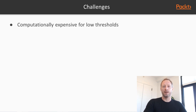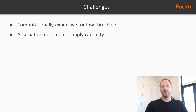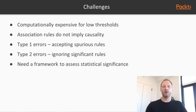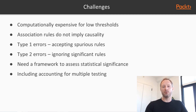There are numerous challenges in dealing with market basket analysis and association rules more broadly. They can be very computationally expensive because there are many potential rules to explore, especially with low thresholds. We will look at the a priori algorithm shortly, which has managed to address this challenge successfully. It's also important to keep in mind that association rules do not imply causality. You can also run into statistical errors — for instance, type 1 errors where you accept rules that are not actually valid, and type 2 errors where you ignore significant rules and miss them. We need a framework to assess the statistical significance of the rules. Additionally, we run into the multiple comparison problem, which requires an adjustment to the thresholds we use to accept or reject hypotheses.